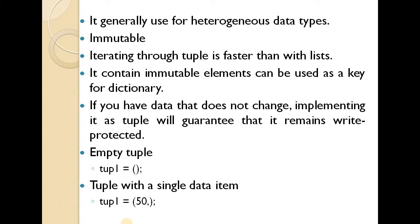Tuples are faster than lists. Immutable elements can be used as a key for a dictionary. An empty tuple is a variable set to empty parentheses, and a tuple with a single element is written as tuple1 = (50,).